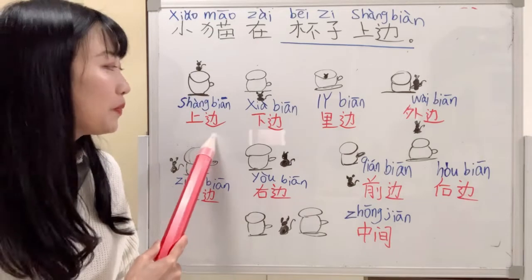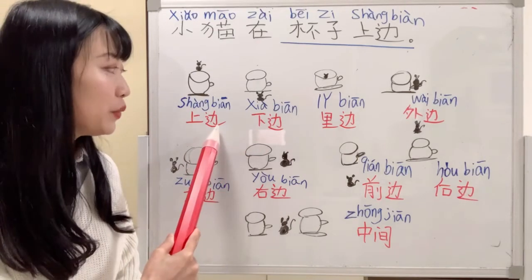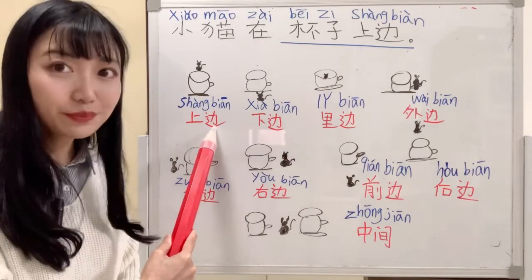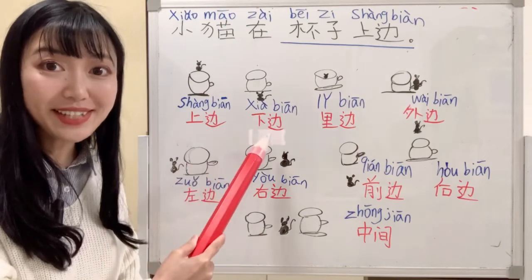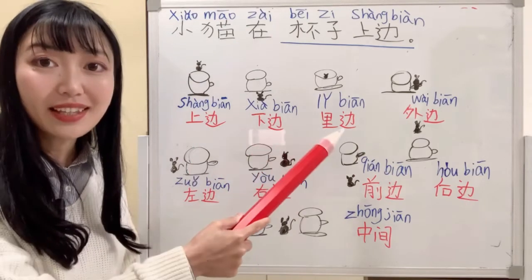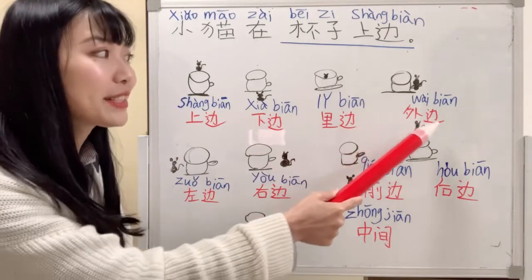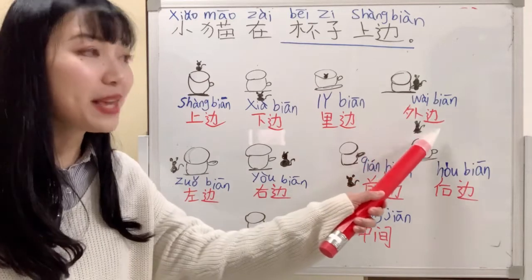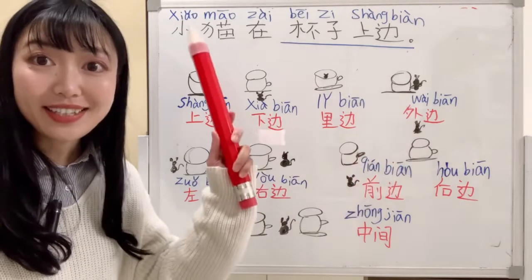So we always use 边. 上边, 下边, 里边. Outside is 外边.